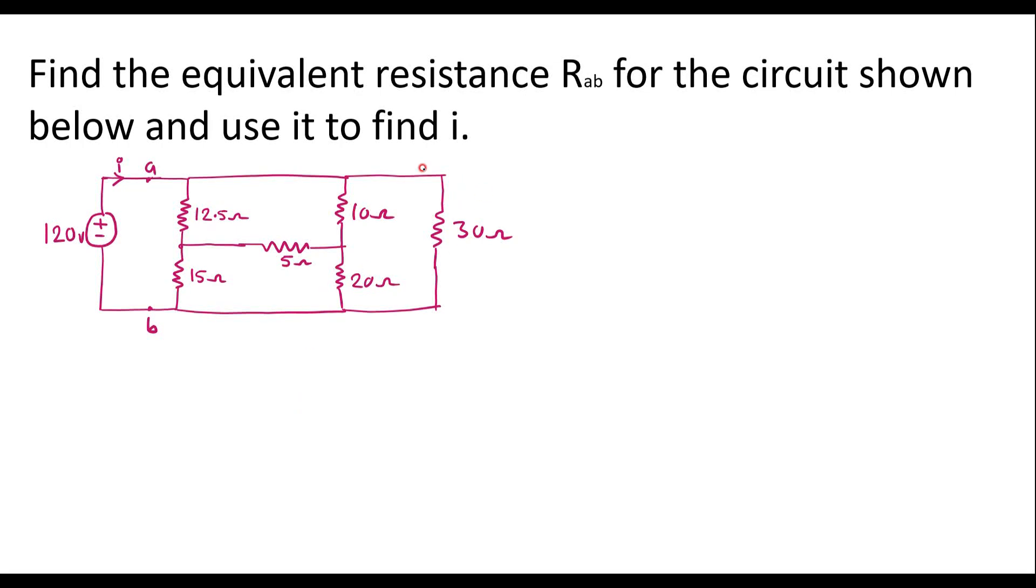Consider one example on networks. Find the equivalent resistance RAB for the circuit shown below and use it to find I. Here we can see that this is point A and this is point B. We are supposed to find the resistance between these two points. Later we are supposed to calculate current I.